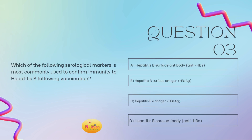Question number three: which of the following serological markers is most commonly used to confirm immunity to hepatitis B following vaccination? Is it A, hepatitis B surface antibody; B, hepatitis B surface antigen; C, hepatitis B E antigen; or D, hepatitis B core antibodies? Take a moment and tell me what you got in the comments.